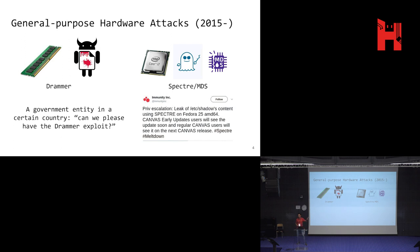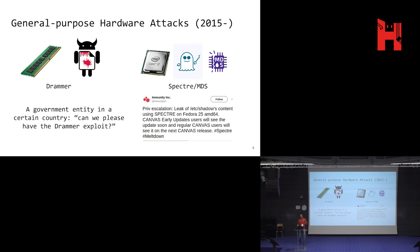You might say: are these just academic? Should I worry about these in the real world? I refer you to a tweet from Immunity Security, developers of the Canvas exploitation pack — you pay $20,000–$30,000 and get this pack to try compromising systems as a pen tester or hacker. They showed that using Spectre, they could leak the content of /etc/shadow. Also, since I was part of Drammer, I know that a government entity at some point asked if they could have access to the exploit we developed for an investigation case. We are an academic group and said no, but this shows governments may also be interested in these types of attacks.